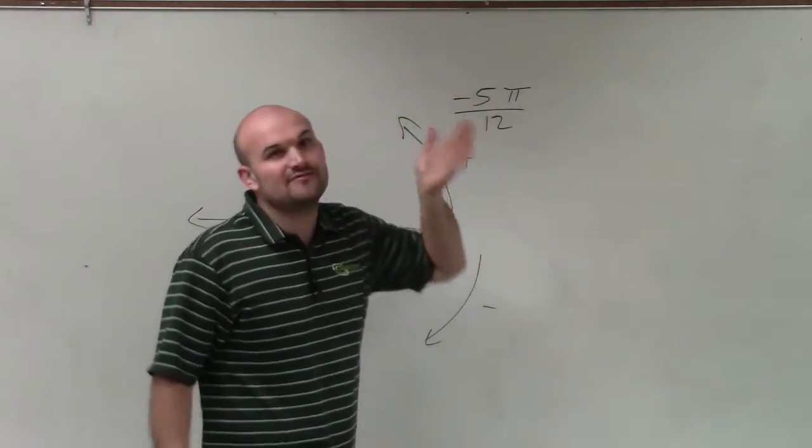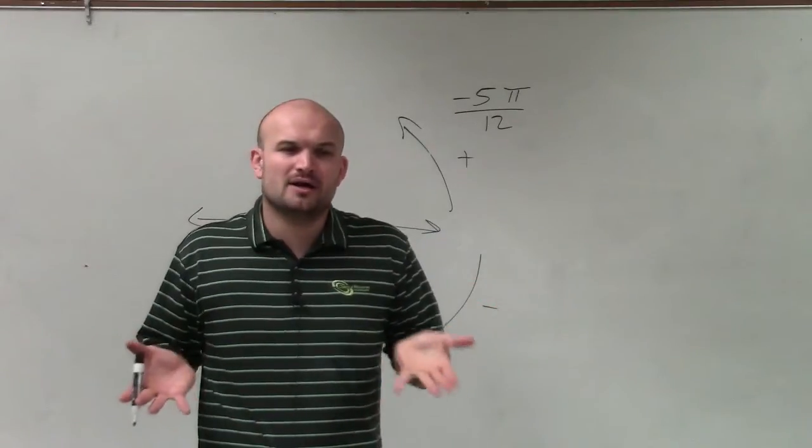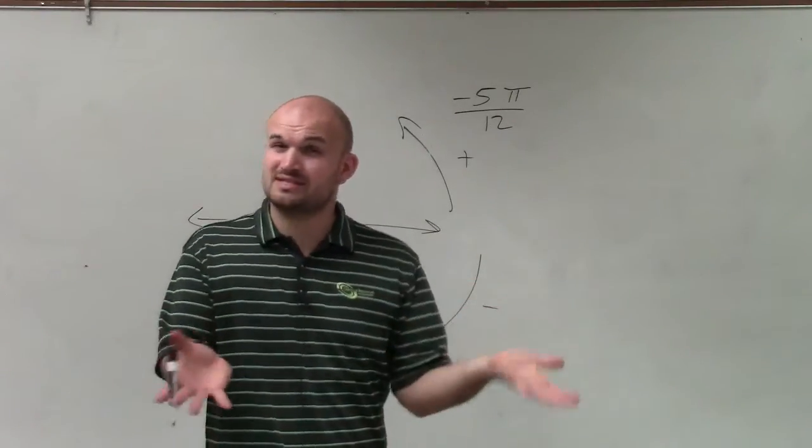Now, the tough thing is we're going to be negative 5 pi over 12. And usually, we don't really break up our circle into 12s, but we still can.